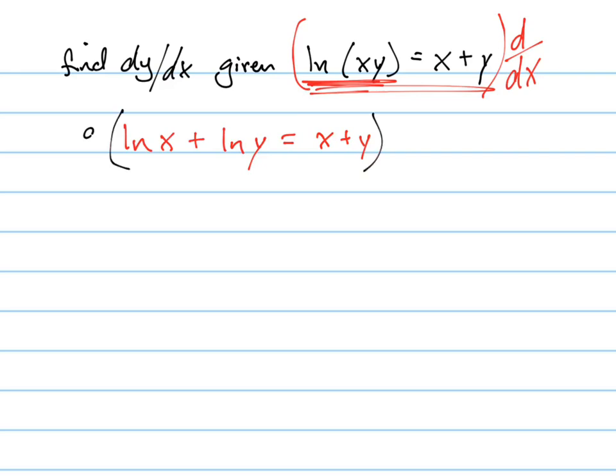Now I'm going to apply to the entire thing the derivative with respect to x. So when I apply that to ln of x, what's the derivative of ln of x? It's just 1 over x.